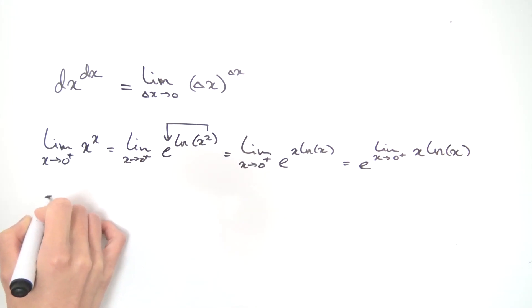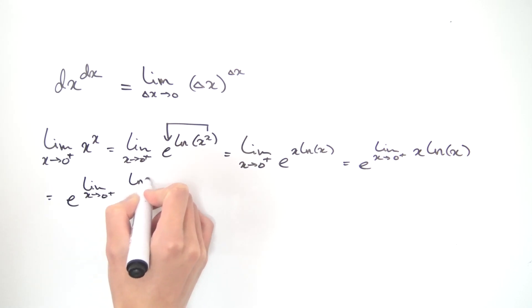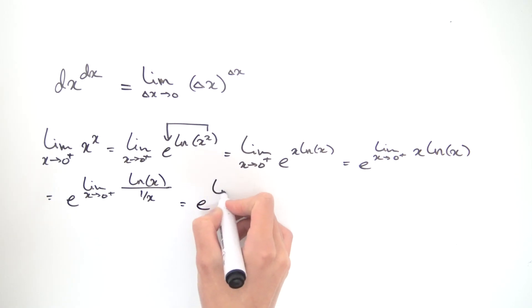So we can actually modify this a little bit by rewriting as e to the limit as x approaches zero plus, we keep the natural log on top, but we divide it instead by one over x. And notice this is now an infinity divided by infinity situation. So let's employ L'Hopital's rule, that this is e to the limit as x approaches zero plus. Differentiating the top, we get one over x. Differentiating the bottom, we get minus one over x squared.